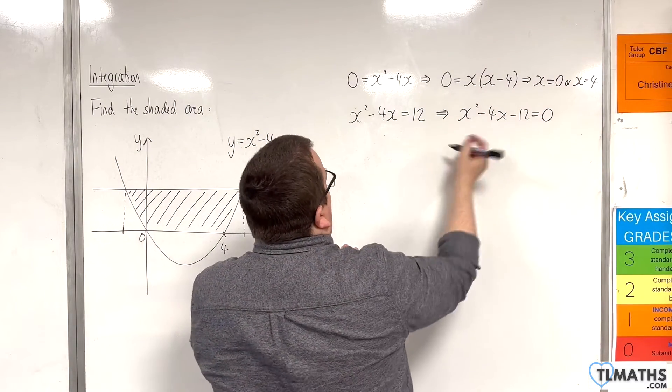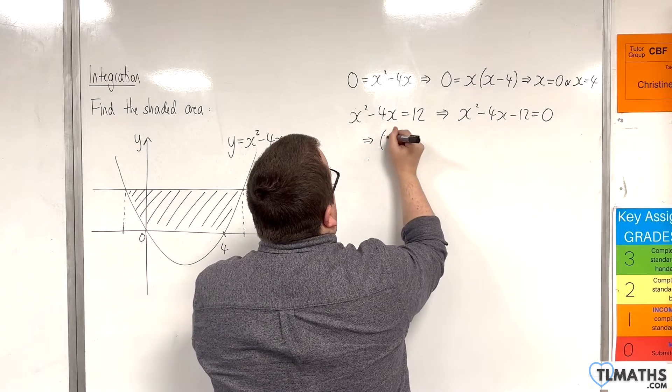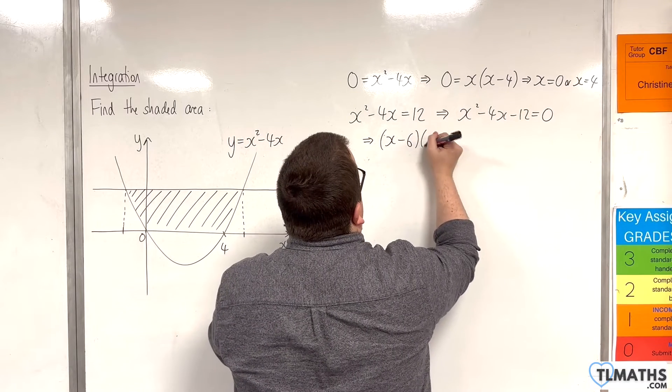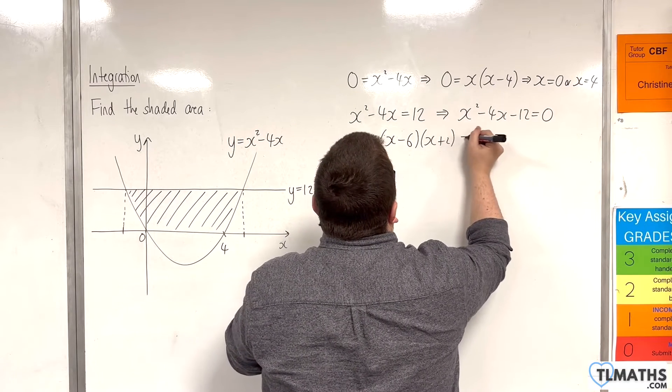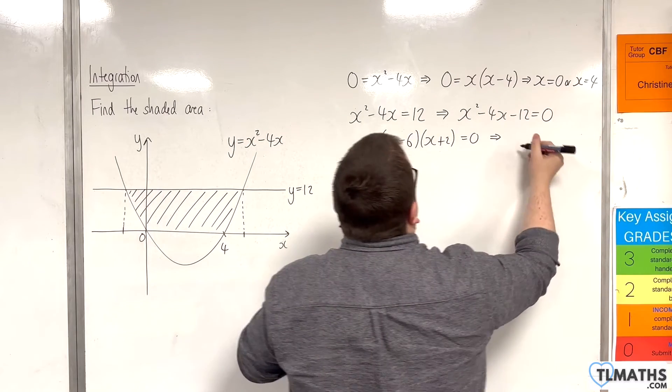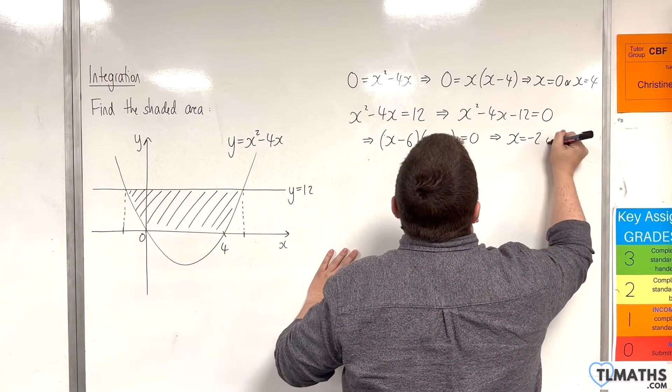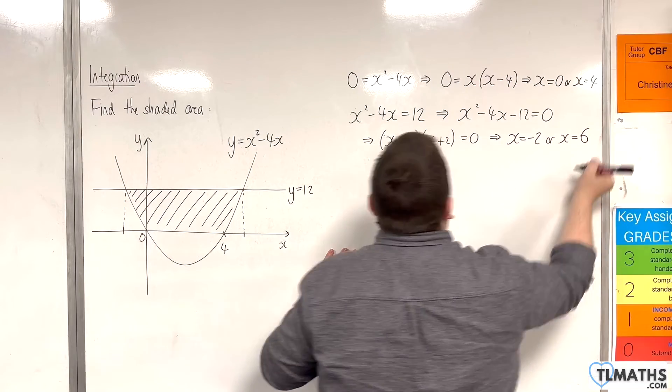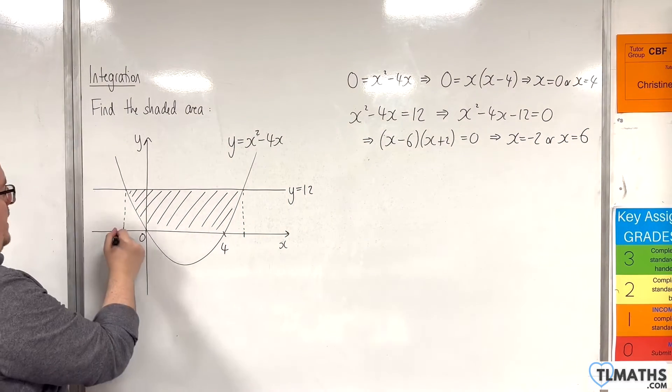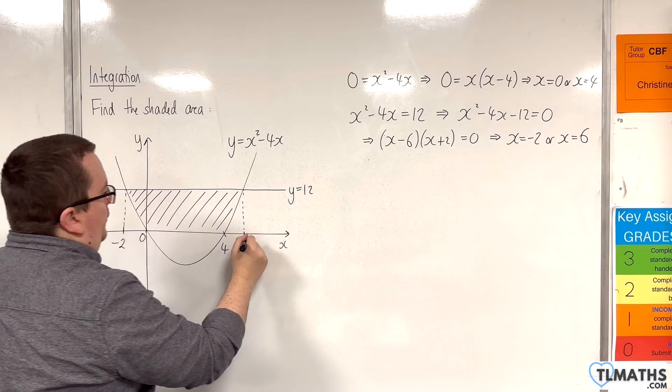And then we can factorise that. So that would be x take away 6 times x plus 2 is equal to 0. And that implies that x is minus 2 or x is 6. So here is minus 2, here is 6.